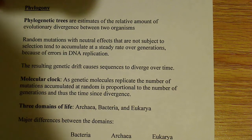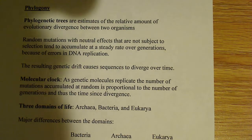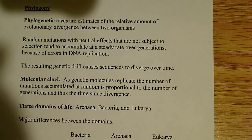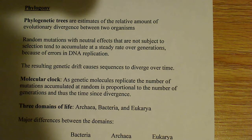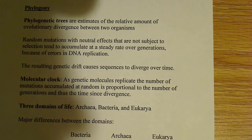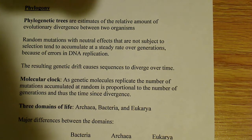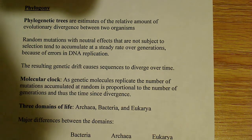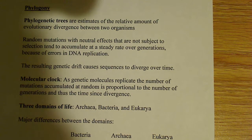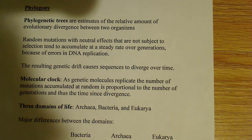That leads us to the idea of a molecular clock. As genetic molecules replicate, the number of mutations accumulated at random is proportional to the number of generations, and thus the time since divergence. Basically, you can look at the number of mutations in the DNA — in this case usually 16S ribosomal RNA, or 18S ribosomal RNA for eukaryotes — and compare them. By comparing how many differences exist in these DNA sequences, how much they diverge from each other, you can determine when two organisms diverged from a common ancestor.